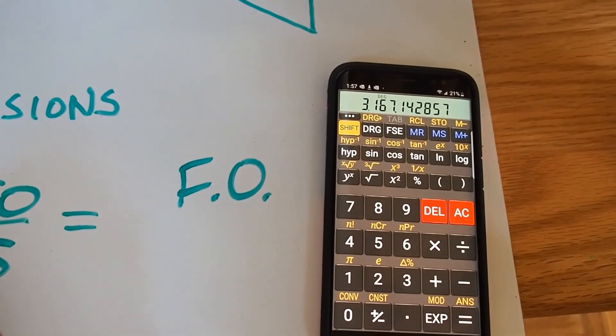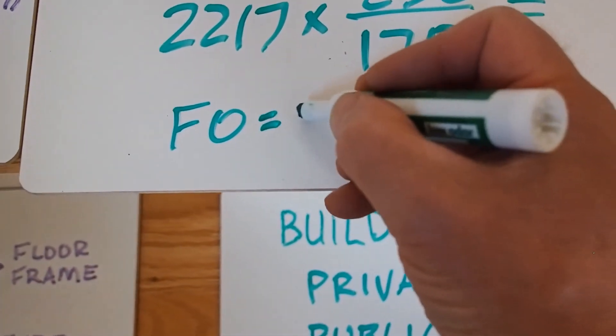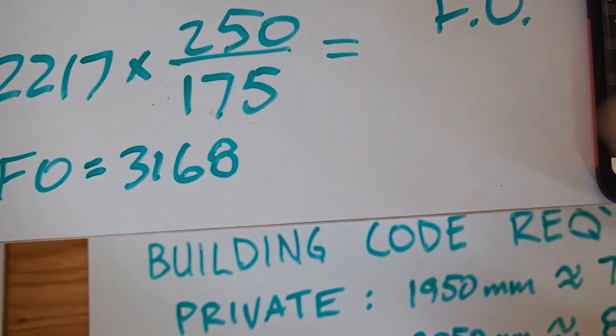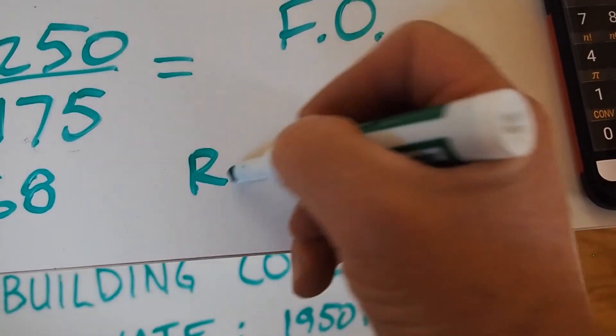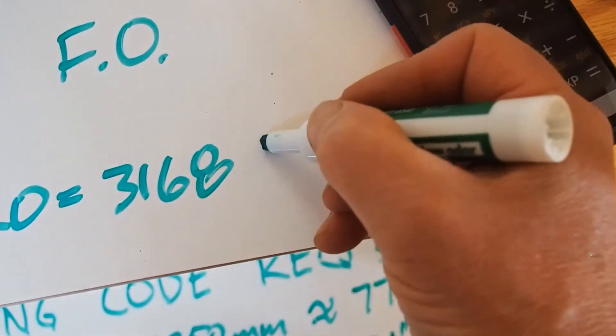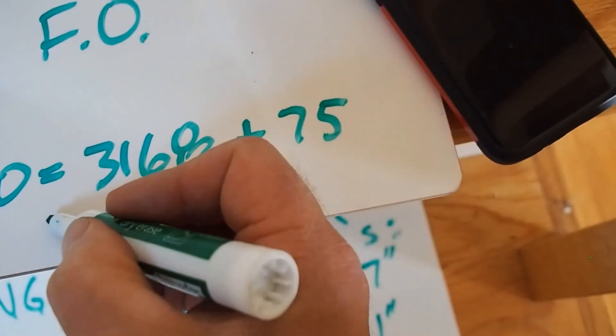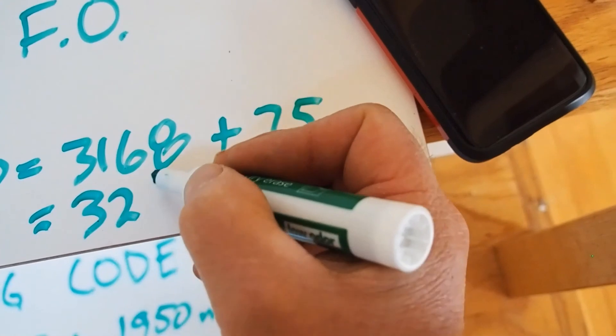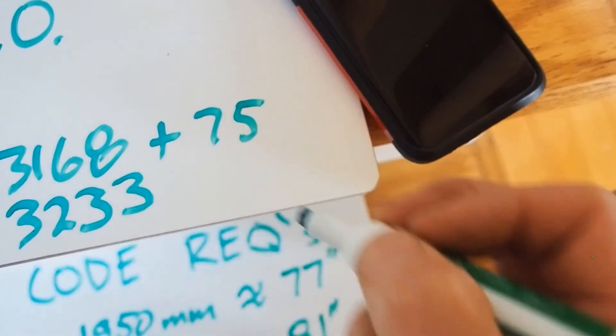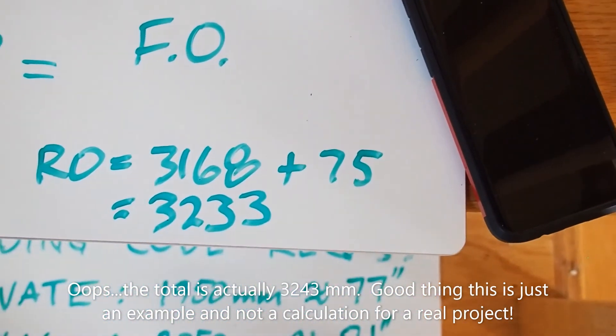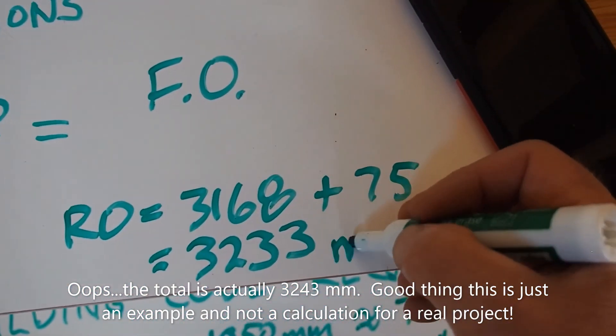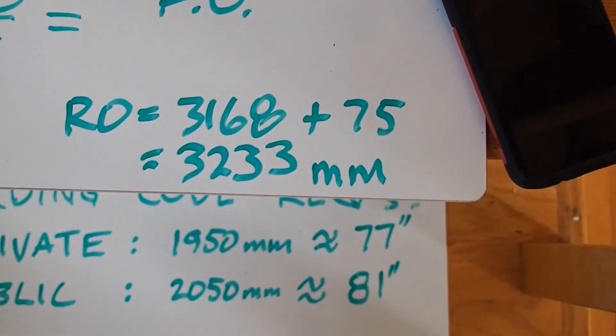So the finished opening is equal to 3,168. The rough opening is equal to that plus 75. 3,168 plus 75, that's 3,243. So for this example I would frame from header to header 3,243 millimeters.